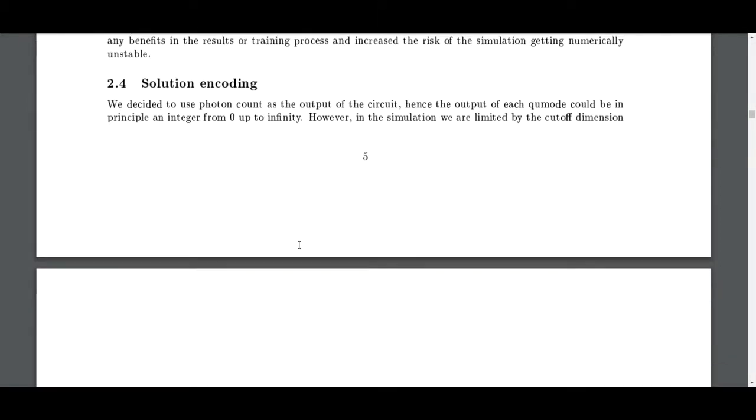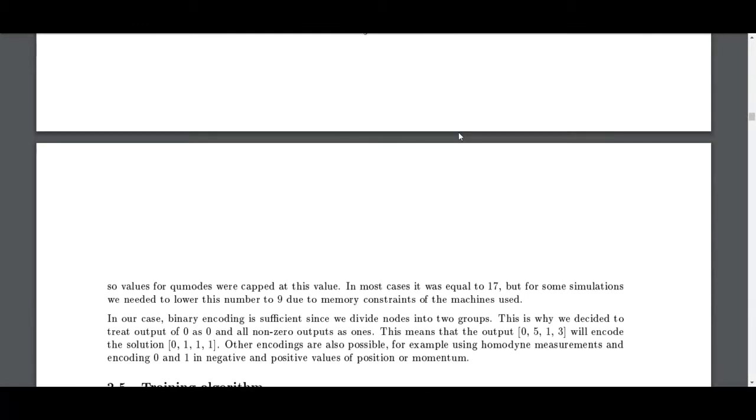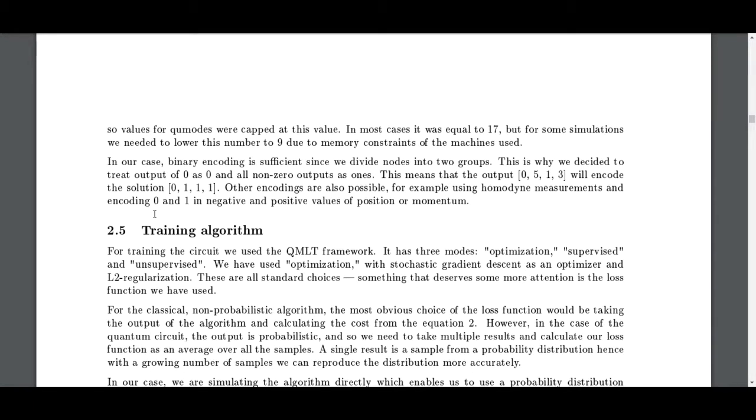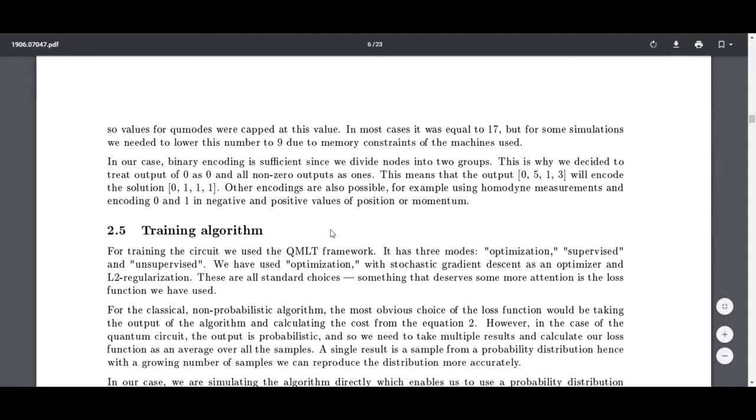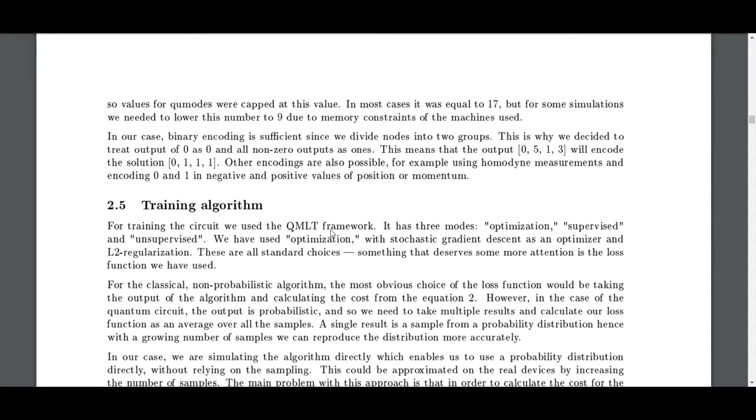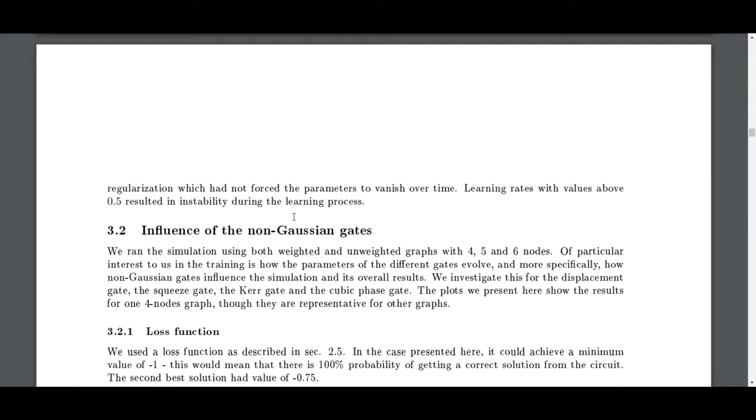Solution encoding: we decided to use photon count as the output of the circuit. Hence the output of each q-mode could be in principle an integer from zero up to infinity, however the simulations were limited by the cutoff dimension. Values for q-modes were capped at this value - in most cases equal to 17, but for some simulations we needed to lower this number to 9 due to memory constraints. Binary encoding is sufficient since we divide nodes into two groups. This is why we decided to treat output of zero and all non-zero outputs as ones. But then what's the point of using continuous variable quantum computing? Isn't there a disadvantage if you do it like that, because you're using a lot of your encoding space to just encode one thing? Other encodings are also possible, for example using homodyne measurements and encoding zeros and ones in negative and positive values of position or momentum.